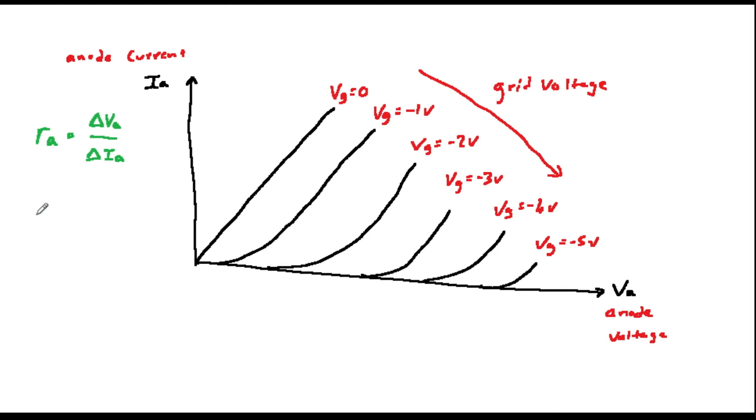Since anode voltage also varies with grid voltage, for the reason that we have just explained, it is useful to put a figure on this as well. This is called mu, and is equal to delta VA over delta VG, and is sometimes called the amplification factor.